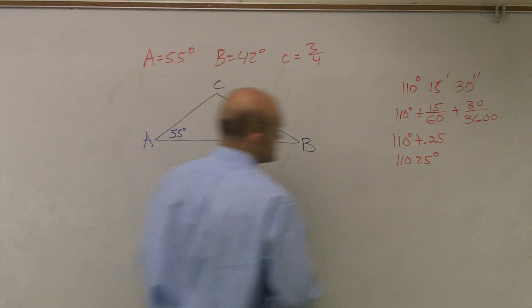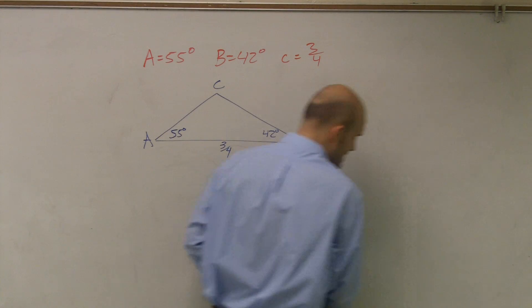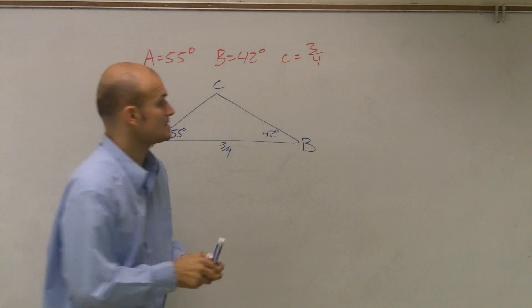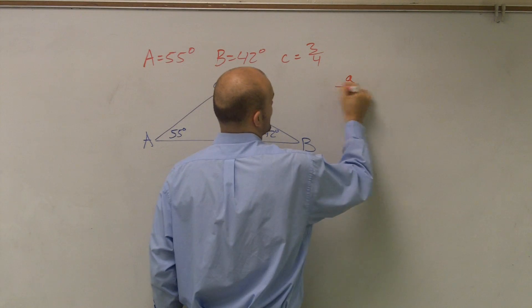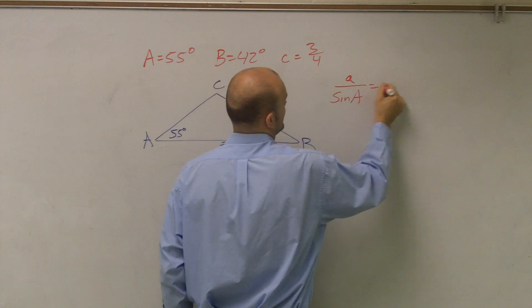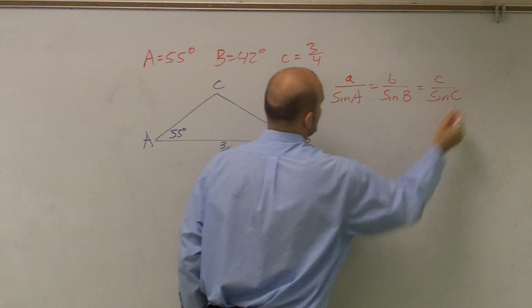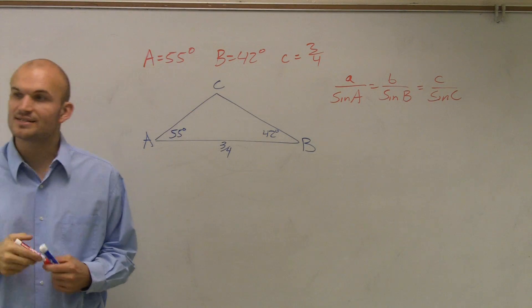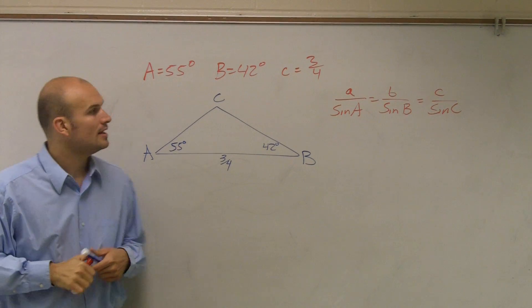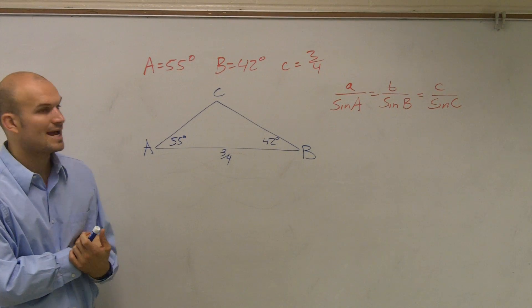So it says use the law of sines. Well, the law of sines, as we remember it, is A over sine of A equals B over sine of B equals C over sine of C. Lowercase A, B, and C are the side lengths of your triangle, and uppercase A, B, and C are your angles.